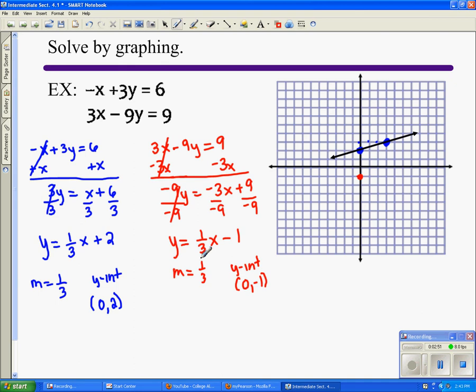And then I'm going to rise over run. So I'm going to go up one, right three. Up one, right one, two. Up one, right three. And then we're going to graph a line through it.